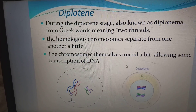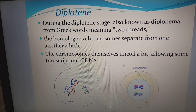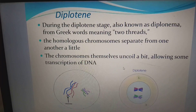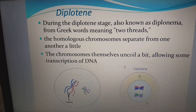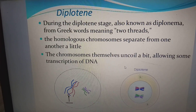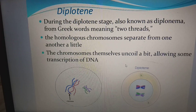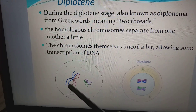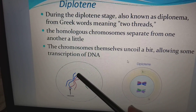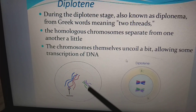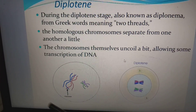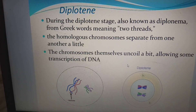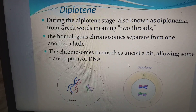Crossing over means overlapping of one chromatid over another. During the diplotene stage — also known as diplonema from the Greek word meaning two threads — the homologous chromosomes separate from one another a little. After crossing over, the chromatid material gets exchanged, and the chromosomes uncoil a bit, allowing some transcription of DNA. We can see chiasma formation in the diplotene stage — the X-like formation where exchange of chromatids takes place. So the sequence is: thin threads → synaptonemal complex → crossing over → chiasma formation.